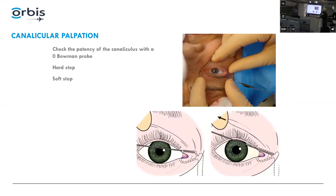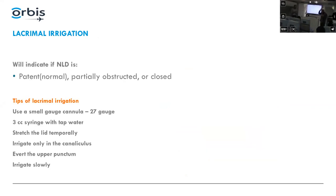For canalicular palpation: press on the canaliculus — if pus comes out, it's blocked. If you're courageous, you can also probe to check for stricture or obstruction in the canalicular system. The most common way to diagnose nasal lacrimal duct obstruction is lacrimal irrigation, which tells you exactly where the blockage is and whether it's partial or complete.